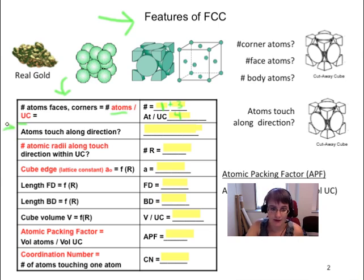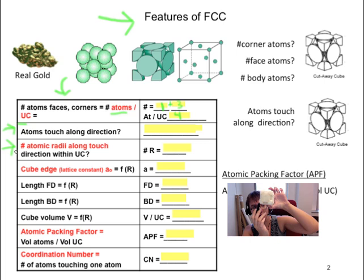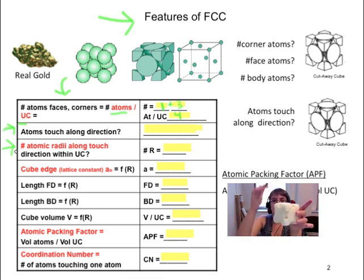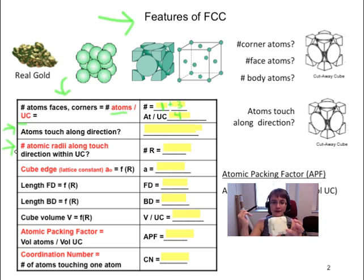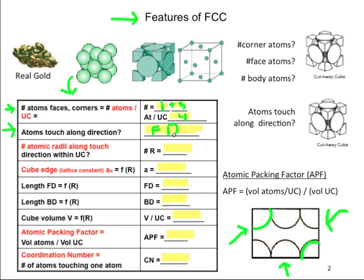The next problems ask what direction the atoms touch on and the number of atomic radii along that direction. Looking at our companion cube, we can tell the atoms definitely don't touch across the edges. They definitely touch across the face diagonal — we can clearly see the atoms touching there. And the atoms do not touch along the body diagonal, which would go from opposite corners through the cube. We have determined that the atoms touch along the face diagonal.